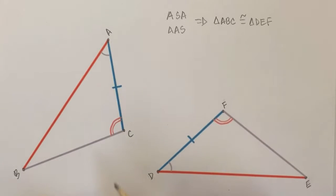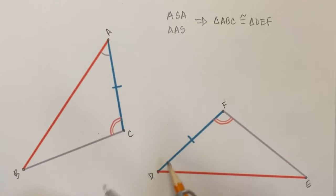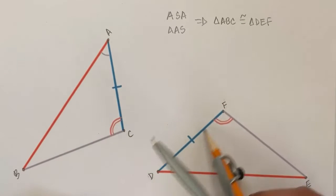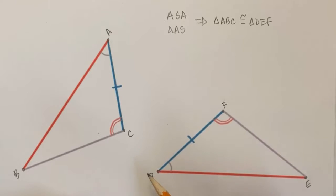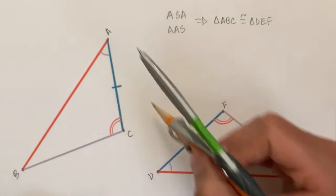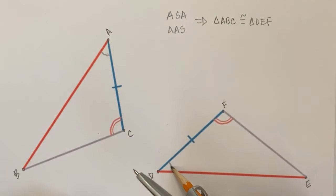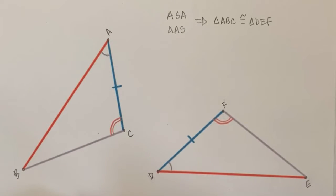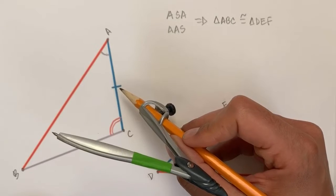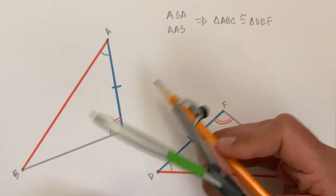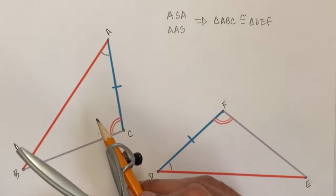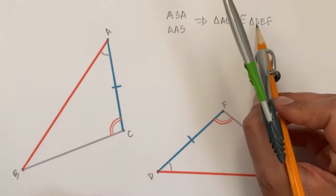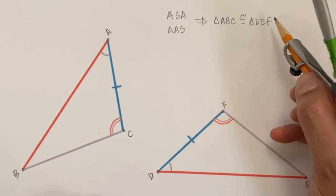What we're going to do in this video is show that if we have two different triangles that have one pair of sides with the same length — these blue sides in each triangle — and two pairs of angles where the corresponding angles have the same measure, then we can always create a series of rigid transformations that maps one triangle onto the other. In other words, they must be congruent by the rigid transformation definition of congruency.